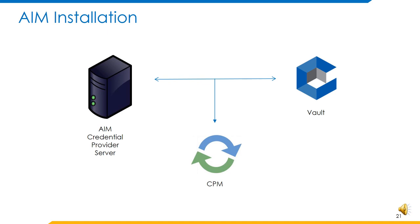The very first step to be performed on the CyberArk end is the installation of Application Identity Manager. Application Identity Manager should be installed on a Windows Server, which is where our SCIM server is also going to be present. This installation is based on a Windows executable provided by CyberArk for the relevant version of Application Identity Manager you are installing.